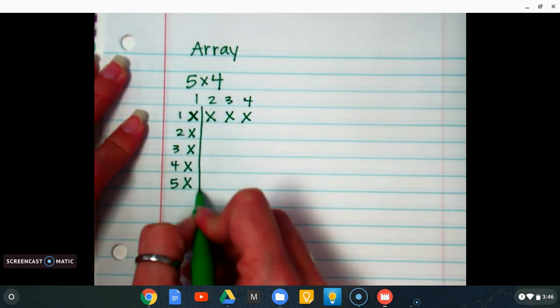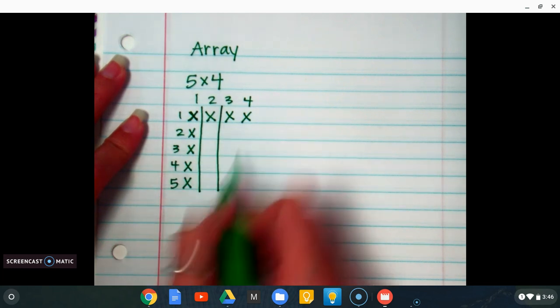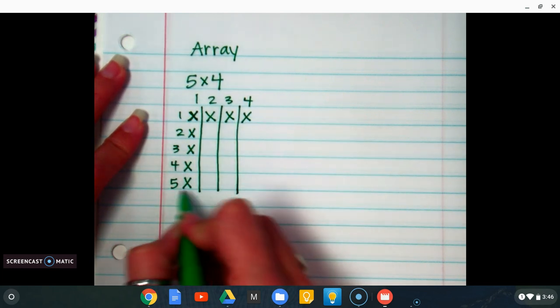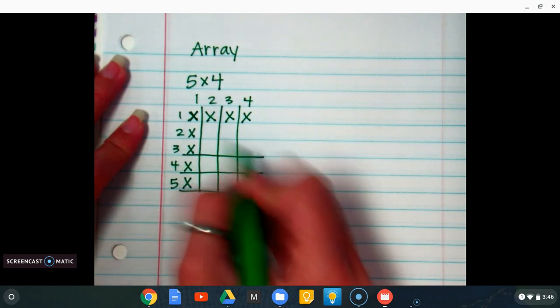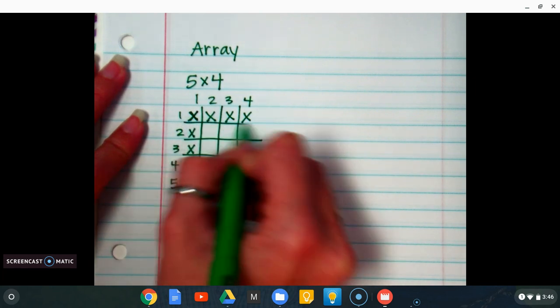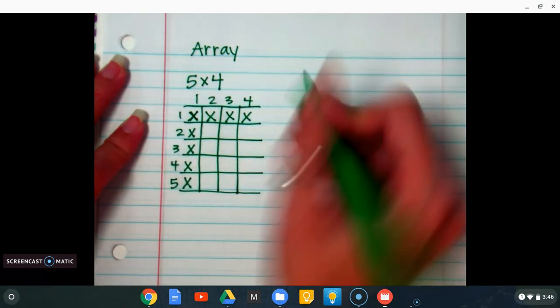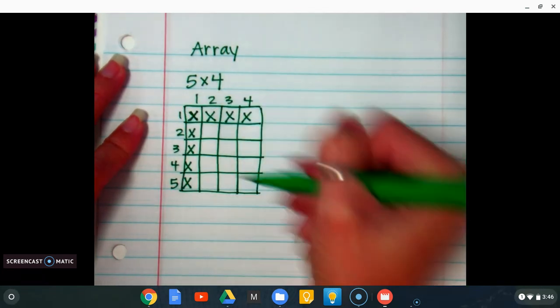After this, they can go ahead and make their lines. If they don't make their lines, then the X's get confused. Sometimes they don't do this neatly, which is how they end up not getting the correct product, which is what we call the answer to a multiplication problem. So now I have my array box.